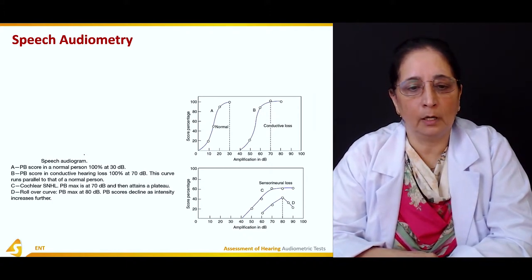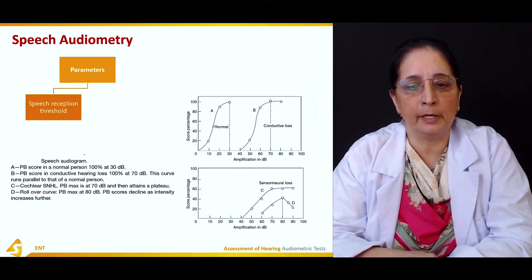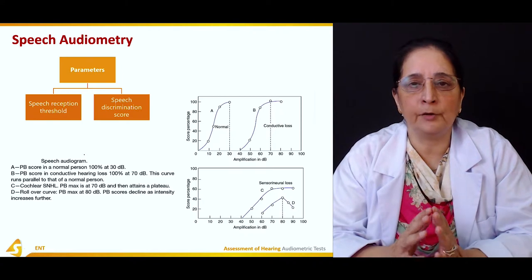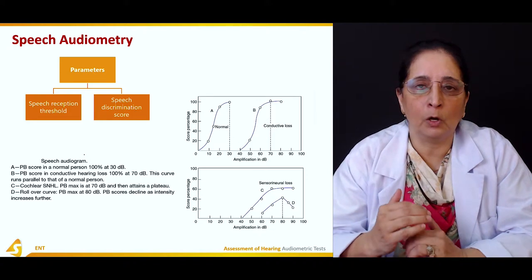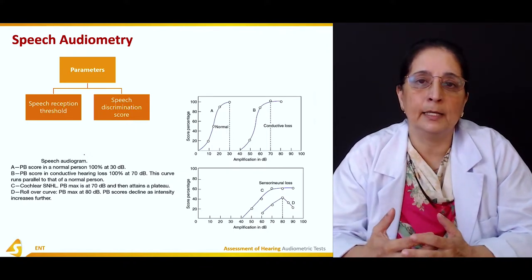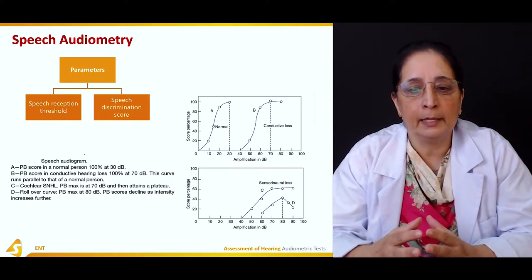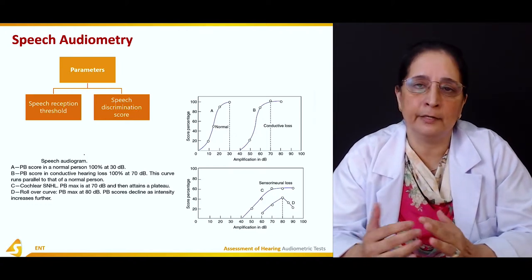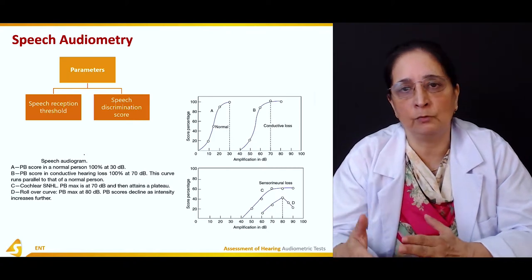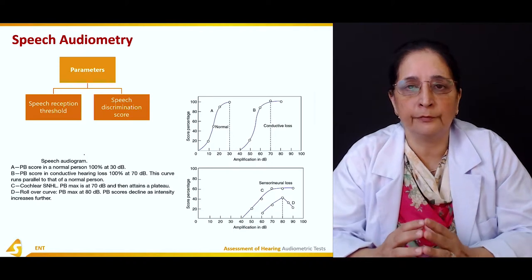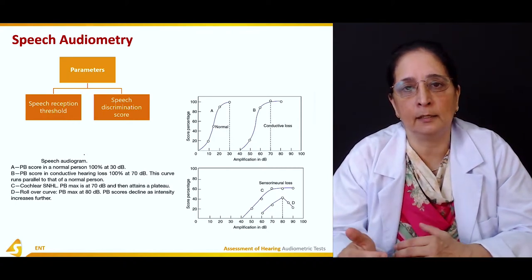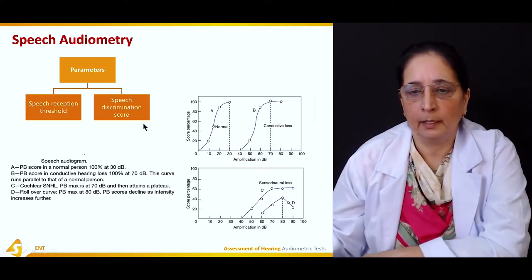In speech audiometry, the two important parameters are the speech reception threshold and the speech discrimination score. The speech reception threshold is the point at which the patient begins to receive or hear speech. Speech discrimination is different — it refers to the patient actually understanding words, not just detecting them.